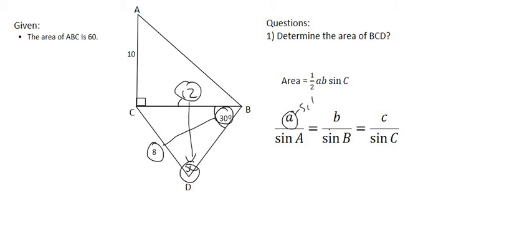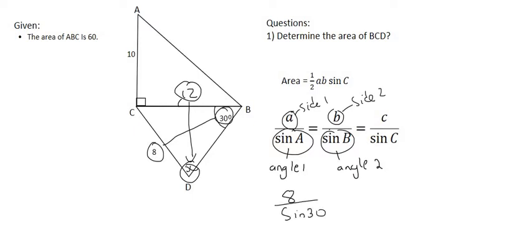This will be the side, that'll be one side, this will be a second side, and this will be the angle opposite to the first side, so we'll call that angle 1, and this will be the angle opposite the second side, so we'll call that angle number 2. I'm going to start off with side 1, which is 8, over the sine of angle 1, which is the sine of 30, because they're opposite each other. Then we're going to say 12 over the sine of X.